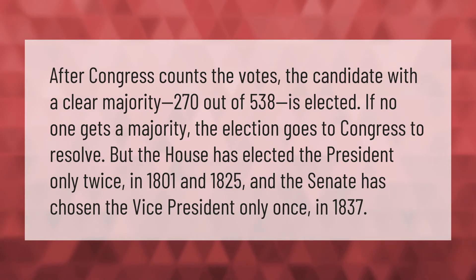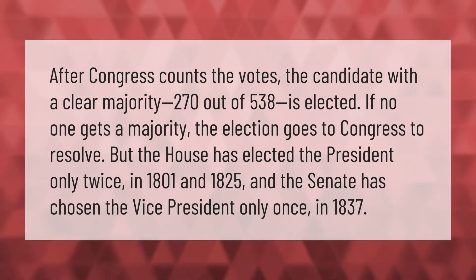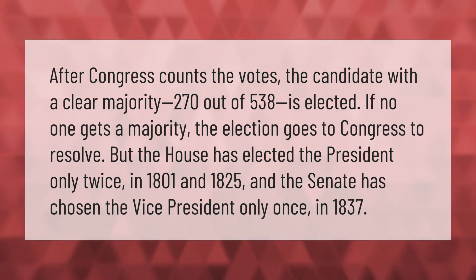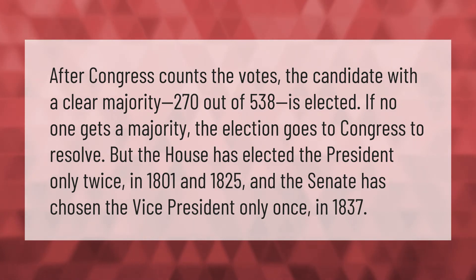After congress counts the votes, the candidate with a clear majority — 270 out of 538 — is elected. If no one gets a majority, the election goes to congress to resolve. The house has elected the president only twice, in 1801 and 1825, and the senate has chosen the vice president only once, in 1837.